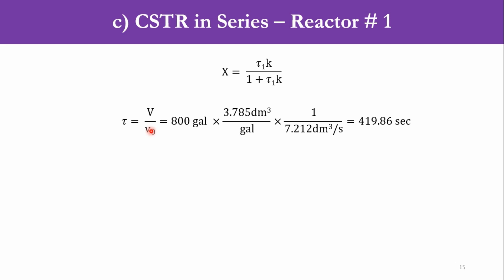Because now, the complete feed is going to the first reactor instead of splitting. V is 800 gallons, again the same conversion factor and divided by 7.212. So, accordingly we get 419.86 seconds. Then Damköhler number DA1 is tau 1 k, 419.86 into 0.0052, get 2.183. And accordingly in the first reactor, we get 68.6% conversion. This was very straightforward, just like the CSTR in parallel, with an exception obviously, that V0 was not divided by 2.